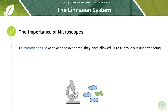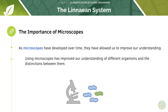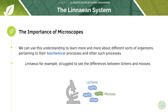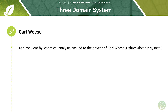As microscopes have developed over time they have allowed us to improve our understanding and draw distinctions between different organisms. We can use this understanding to learn more about different organisms pertaining to their biochemical processes. For example, Linnaeus struggled to see the differences between lichens and mosses, but as time went by, chemical analyses led to advances in classification.